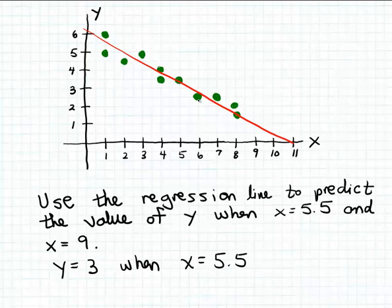Namely 5 and 6. But x equal to 5.5 itself is not an x coordinate in the scatter plot.